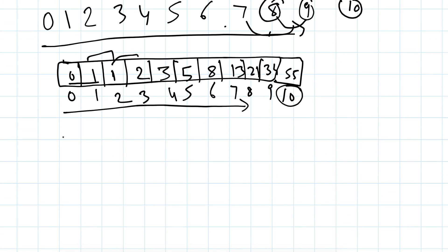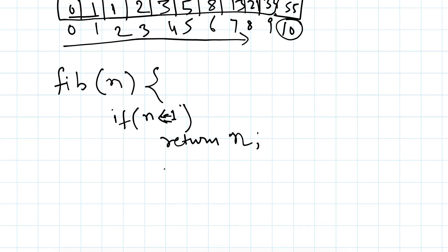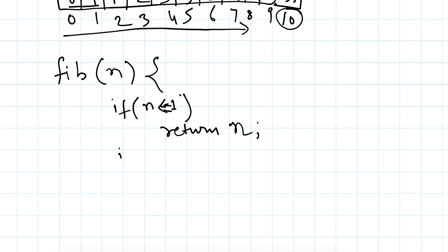So how can we write this function? We keep one array of size n, initialize it to 0, then initialize F(0) as 0 and F(1) as 1 and start looping from index 2.